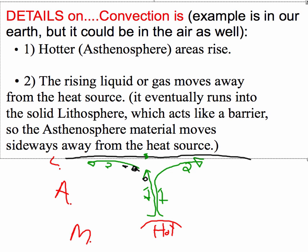And the first thing that happens is the hotter asthenosphere—that's what the A stands for. We have mantle M, A asthenosphere, L lithosphere, these are some of the layers of the Earth. Heat is in the mantle, it heats up the asthenosphere and the hotter asthenosphere begins to rise towards the surface or the lithosphere.